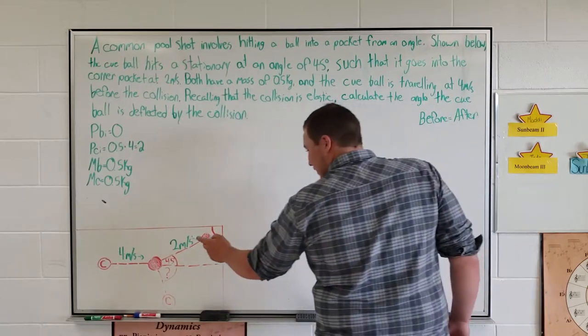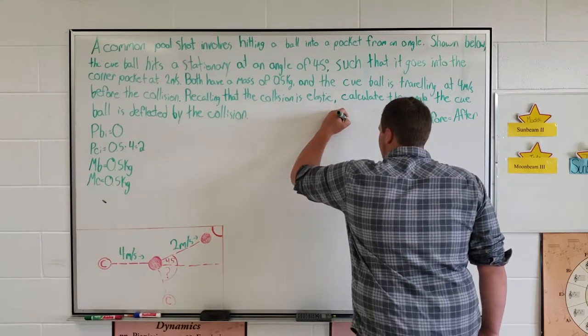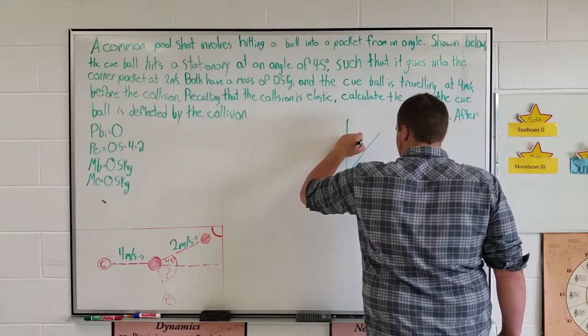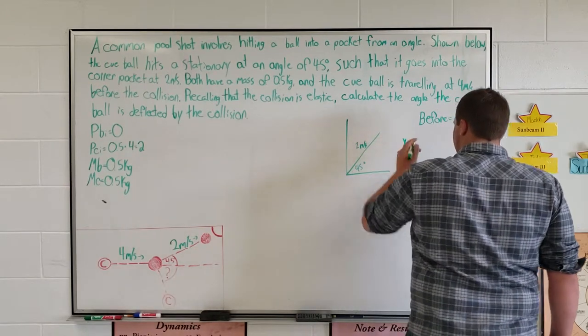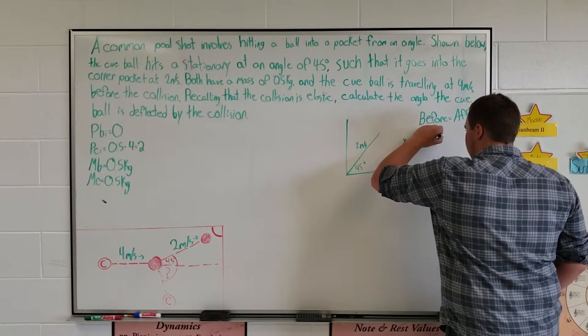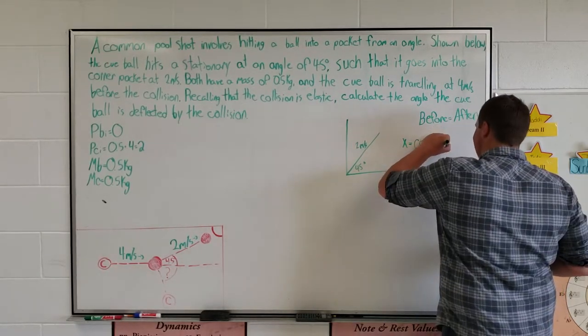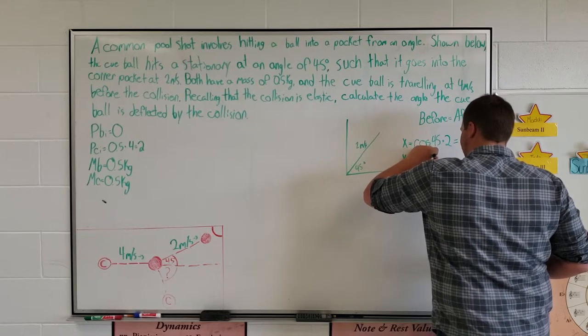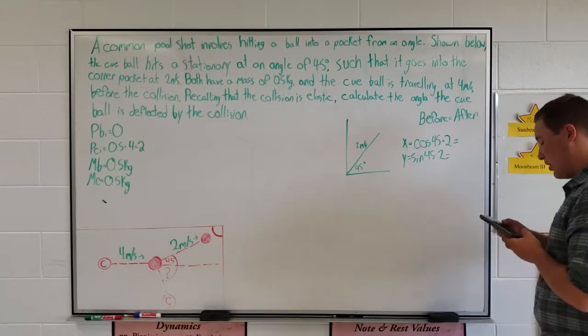We know that the stationary ball goes at 2 meters per second at 45 degrees. To find our x and y components, we take our 2 meters per second times sine and cosine. So x is equal to cosine of 45 times 2, and y is equal to sine of 45 times 2. Since it's a 45 degree angle, our answer will be the same for both and is 1.414.